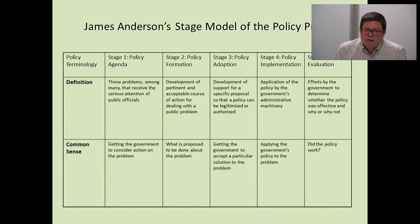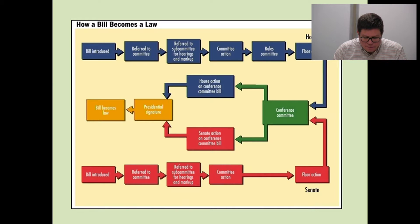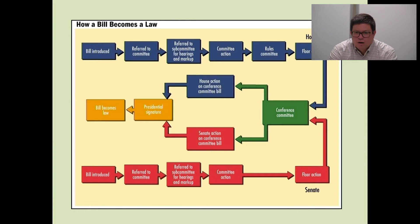That's the overall policy process. Let's focus on stages two and three, which are most germane to Sinclair's book chapter on the Affordable Care Act. Sinclair starts off by saying there's a textbook version of how a bill becomes a law — and this is exactly what it looks like.